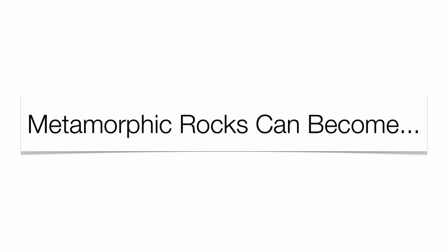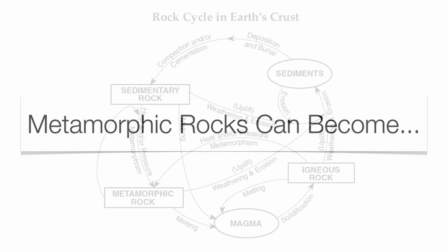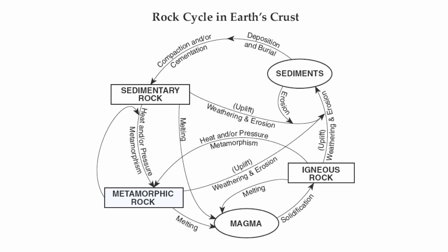Starting with metamorphic rocks: metamorphic rocks can become igneous. They melt into magma and then solidify and crystallize into igneous rock.